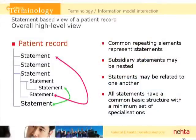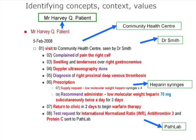Here's a diagram of the overall structure of a patient record — you have statements and linkages between those statements. Here's a simple note for a patient visit: Mr. Harvey Q Patient, on the 5th of February 2008, made a visit to a community health center, was seen by Dr. Smith, and complained of pain in the right calf. They found swelling and tenderness over the right gastrocnemius. A Doppler ultrasonography was done, with a diagnosis of right proximal deep venous thrombosis. A prescription for low molecular weight heparin was recommended — 70 milligrams subcutaneously twice a day for two days — then return to clinic to begin warfarin therapy, and a test request for INR, antithrombin 3, and protein C sent to the pathology lab.